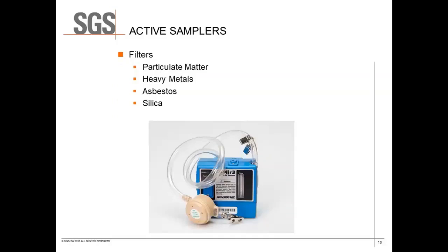For active sampling with filters, you need a fully charged and calibrated pump. You hook the media up to the sample pump, turn it on, and draw air through the filter media, collecting the contaminant onto the filter — you're pulling the whole air sample but only collecting the contaminant onto the filter or sample media. Filters are typically used for particulate matter, heavy metals, asbestos, and silica.